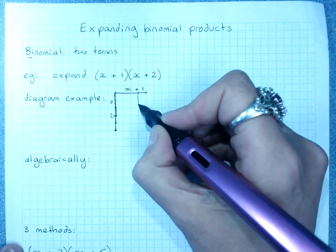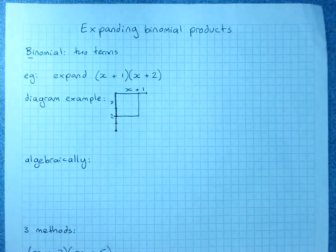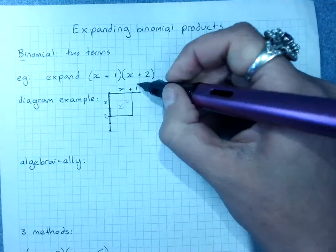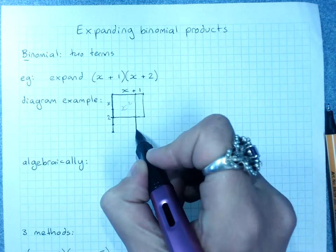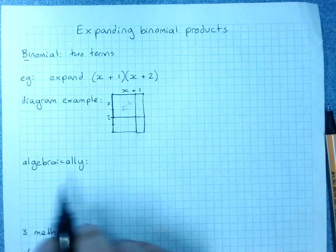So x times x is x squared. Here I have 1 times x, 2 times x and 1 times 2 which is 2.